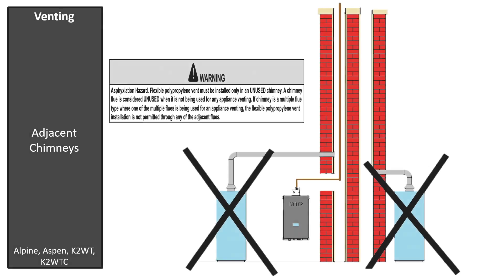In closing, when the building has a multiple flue chimney, you may not use any type of plastic, including polypropylene pipe. Stainless steel is required.